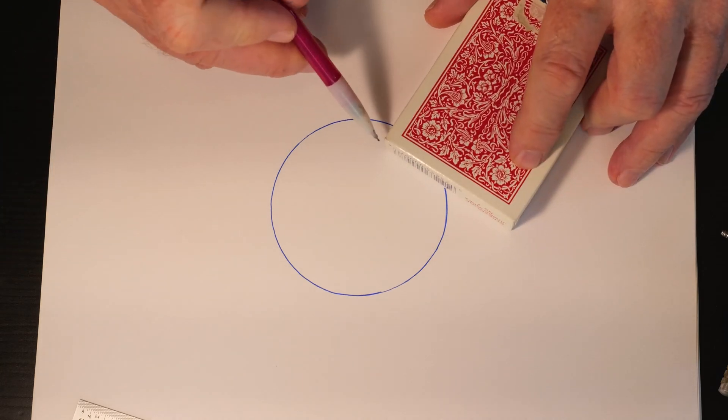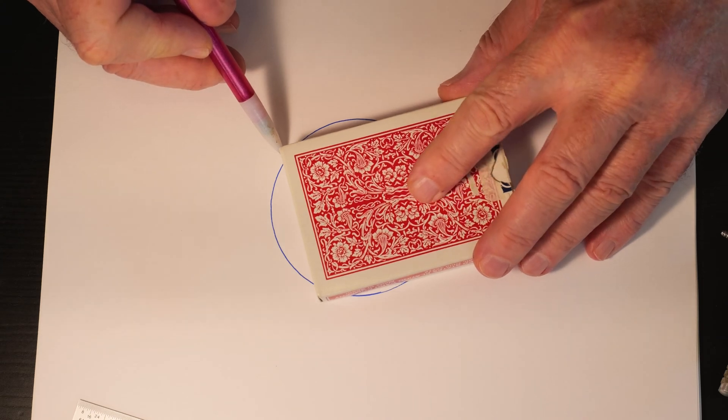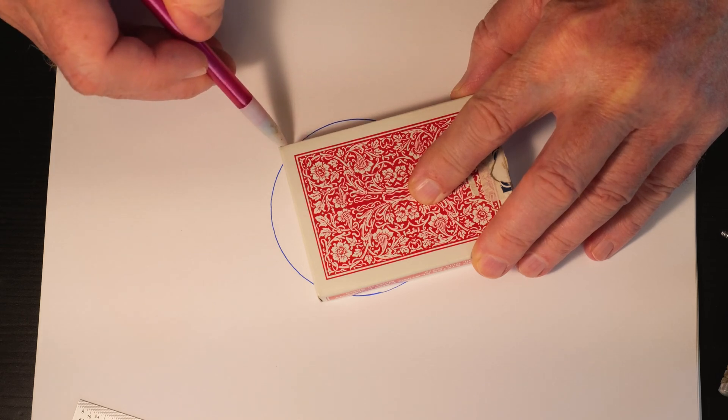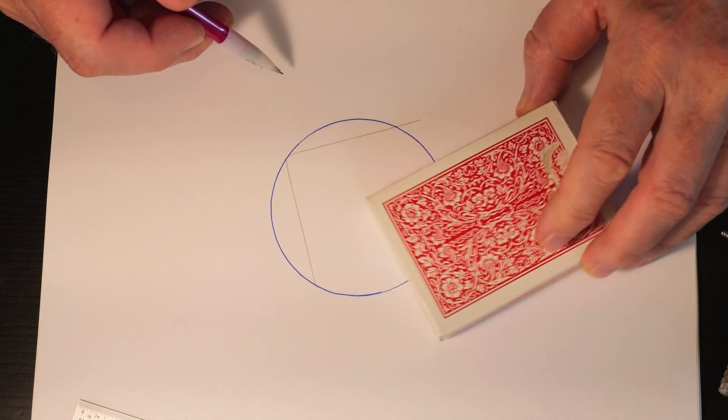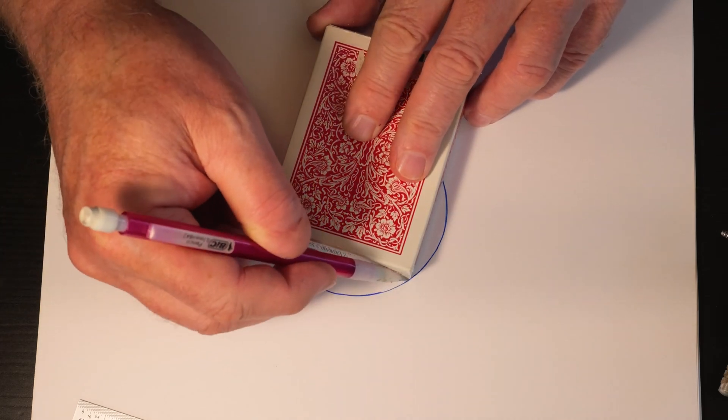What you do is you take the corner of your square and you put it against the outside of the circle, and then you draw lines along both sides of the square. And then you come back over to any other point on the circle and do the same thing.